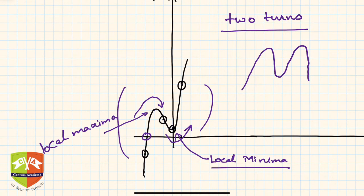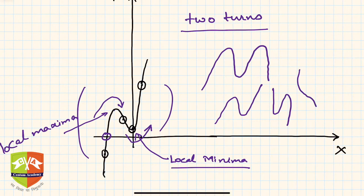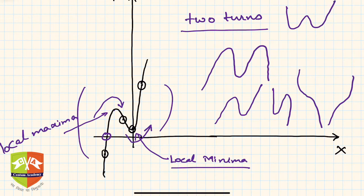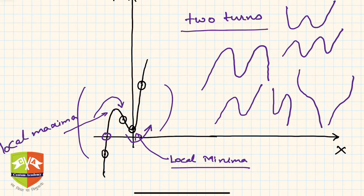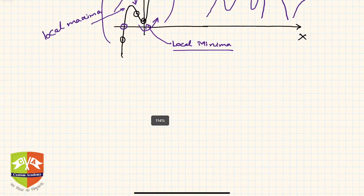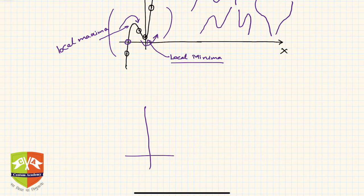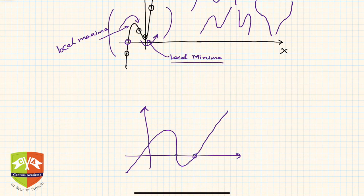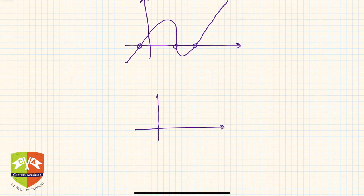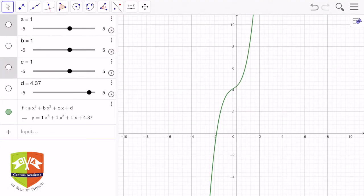A curve with three turns would be a bi-quadratic curve, not cubic. A cubic curve will look either like an S-shape with turns, or it may be more elongated, but it will never have three turns — that is simply not possible. Regarding x-axis intersections, a cubic curve can cut the x-axis at maximum three points — so it could cut at one point, two points, or three points.